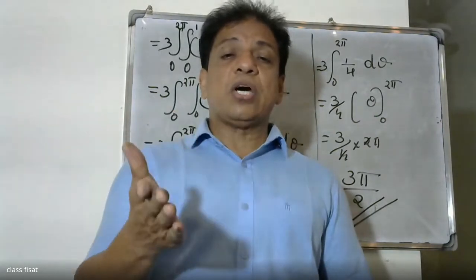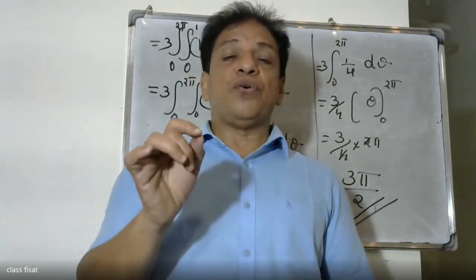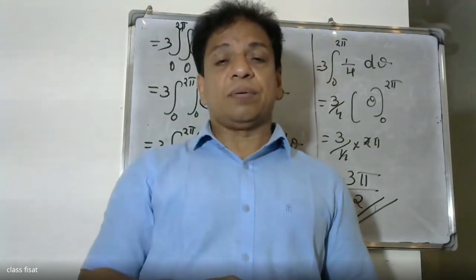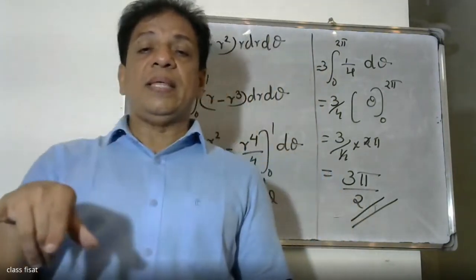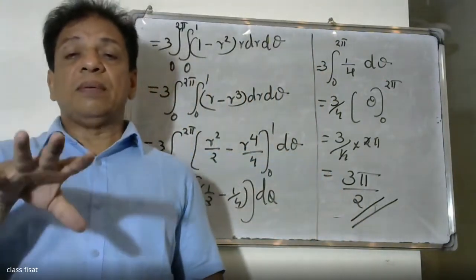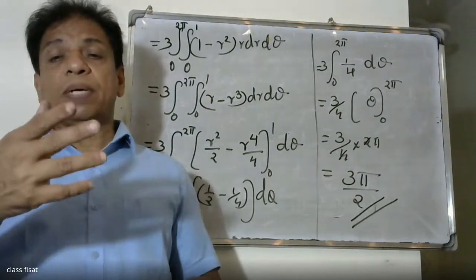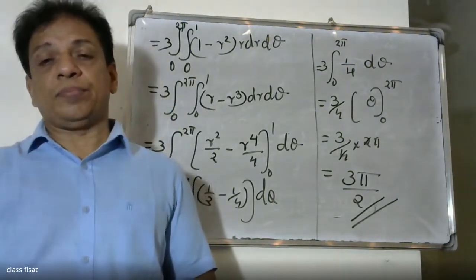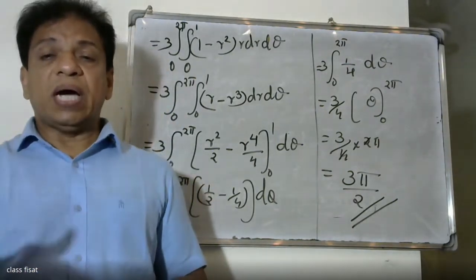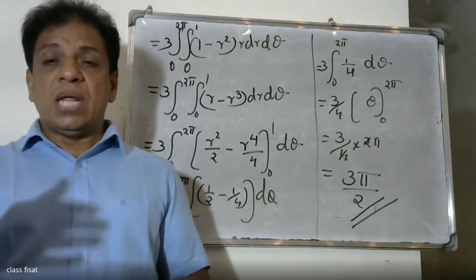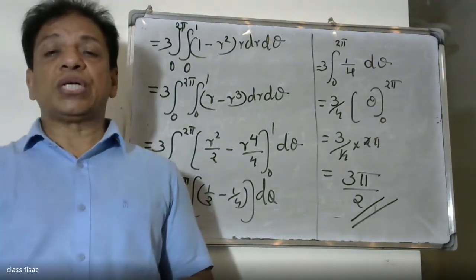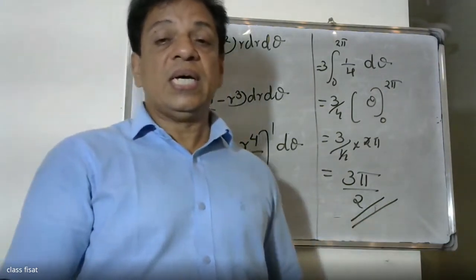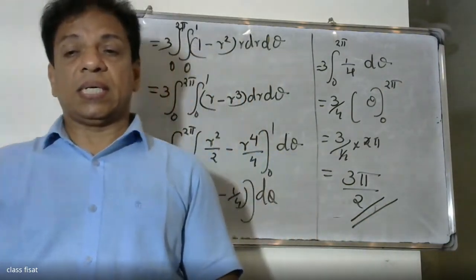The region in polar coordinates: x squared plus y squared less than or equal to 1, so r ranges from 0 to 1, and theta ranges from 0 to 2pi. Therefore the final answer for the flux is 3 pi over 2.